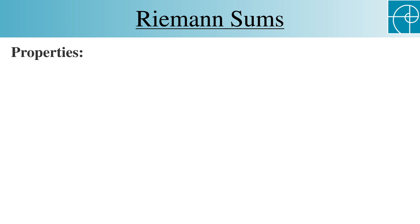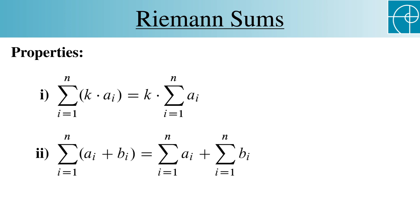There are two properties that we'll use frequently, and should not be surprising. Since the sigma notation is just an abbreviation for addition, we can pull a constant multiple out of the sum, and we can split a sum of two terms into two separate sums.